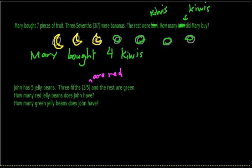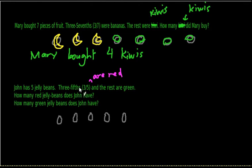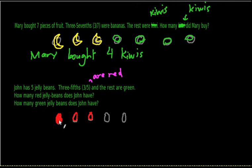So let's write out some sample jelly beans — one, two, three, four, five. At this point, we don't know the color. We have five jelly beans, and it says that three-fifths are red, so three out of five jelly beans are red. Let's color in three of these five to be red — so the first, second, and third. We have three red ones out of the five. So the answer to the first question — how many red jelly beans does John have — is three. John has three red jelly beans.